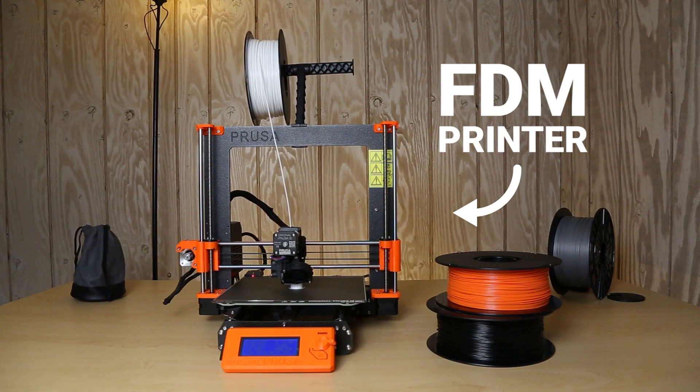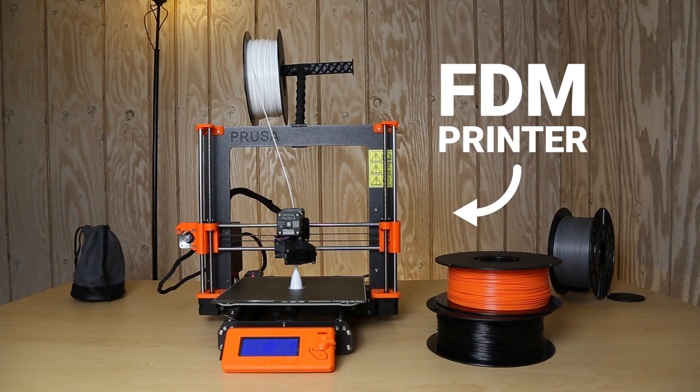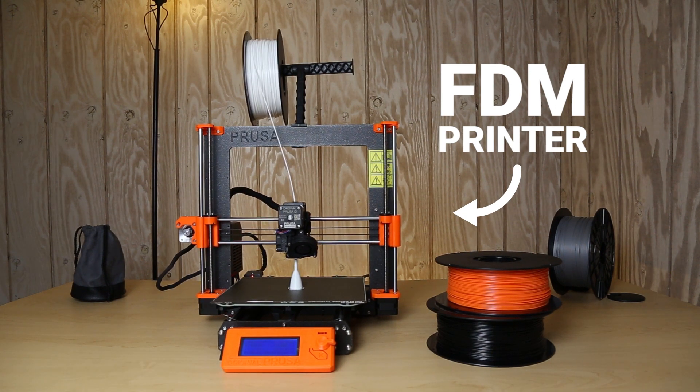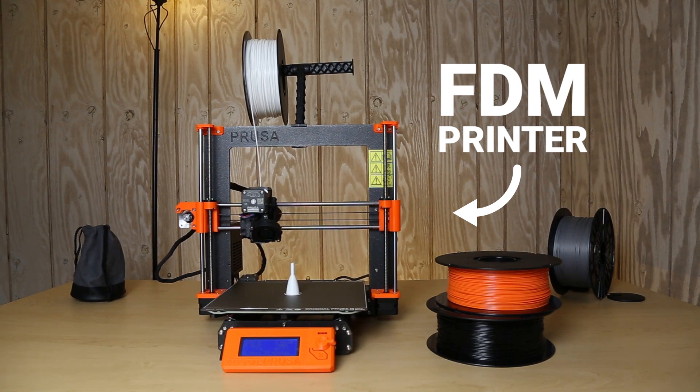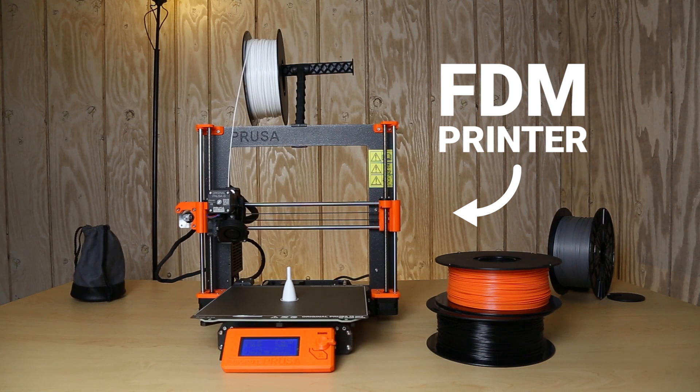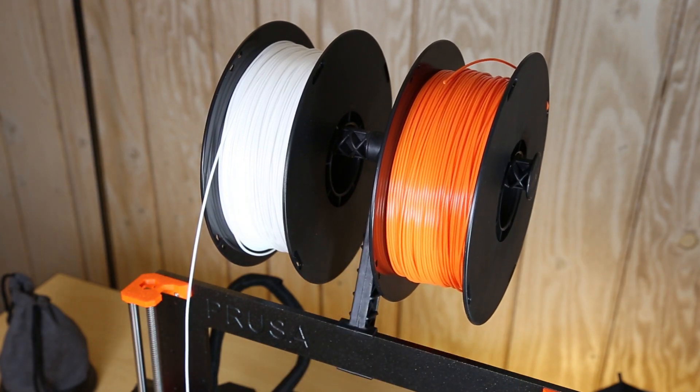The type of the 3D printer I am using is called a Fused Deposition Modeling Printer or simply an FDM printer. These printers use plastics that are called filaments and I am going to use another spool of filament to print the second part of the float in a different color.